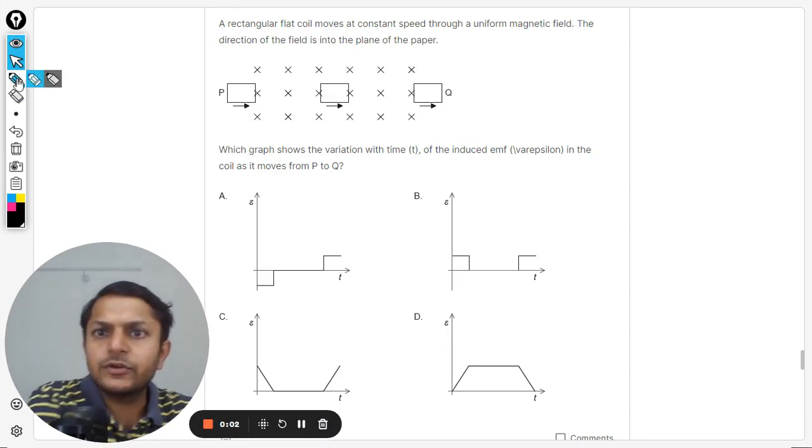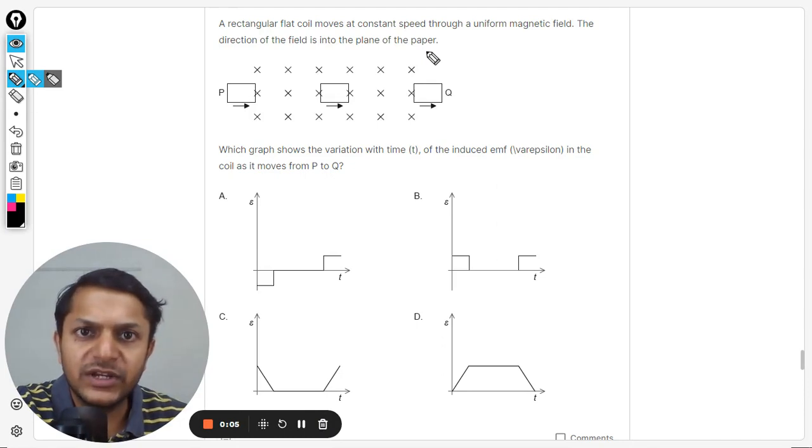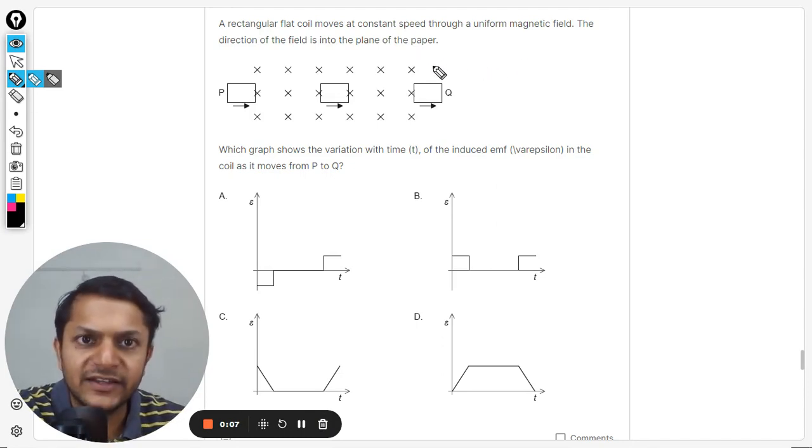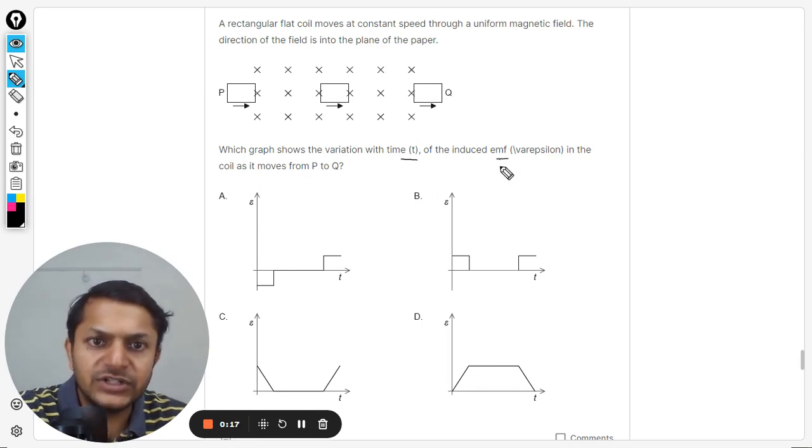Okay dear students, let us see what is there in this question. A rectangular flat coil moves at constant speed through a uniform magnetic field. The direction of the field is into the plane of paper. Which graph shows the variation with time t of the induced EMF?